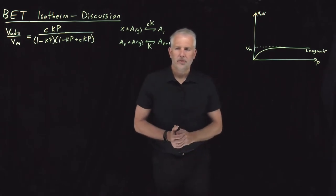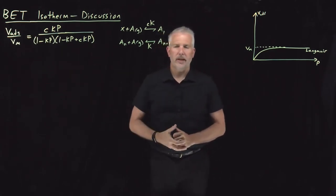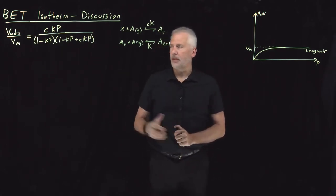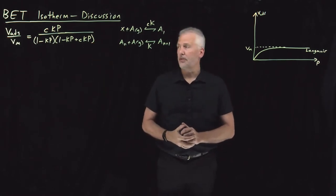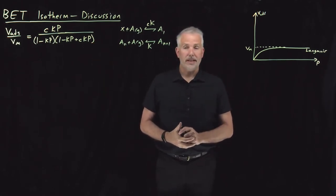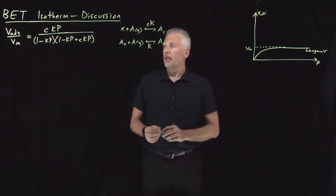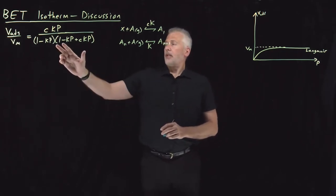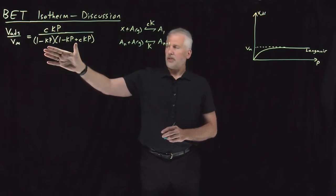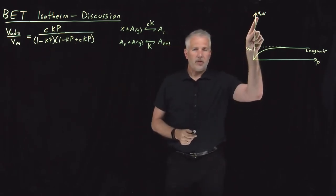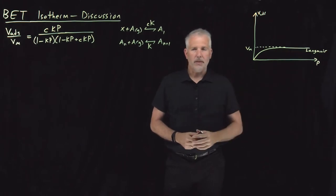We have an expression for how the adsorbed volume of a gas depends on pressure for an adsorption system that obeys the BET model—the Brunauer, Emmett, and Teller model. The next goal is to understand what that means, what this equation looks like if we were to plot a graph of adsorbed volume versus pressure, and how that compares to the Langmuir model.